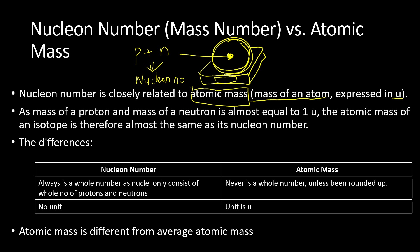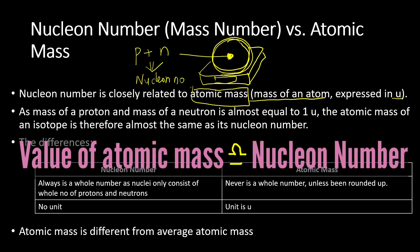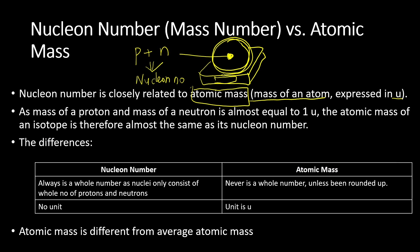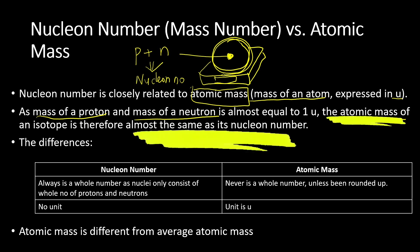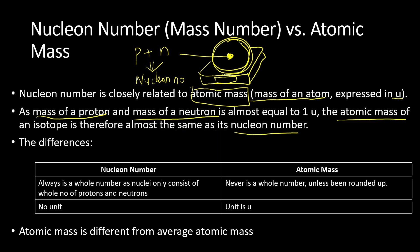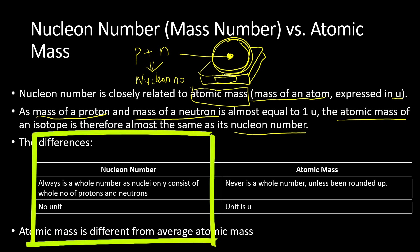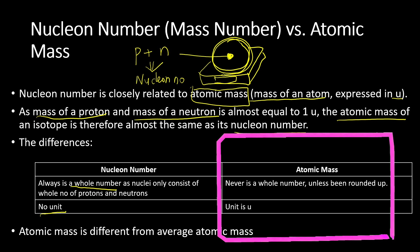However, atomic mass and nucleon number have values that are almost the same. This is because the mass of a proton and the mass of a neutron are each almost equal to 1U. Because of that, the atomic mass of an isotope is almost the same value as the nucleon number. However, nucleon number is a whole number showing how many protons and neutrons are present — it has no unit. But atomic mass is the mass of an atom, so it can never be a whole number unless rounded, and it has a unit: U.